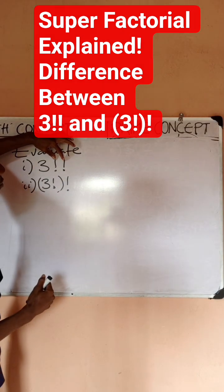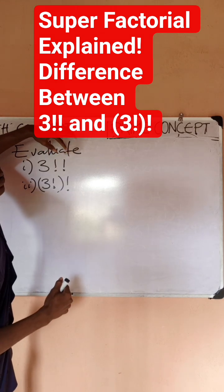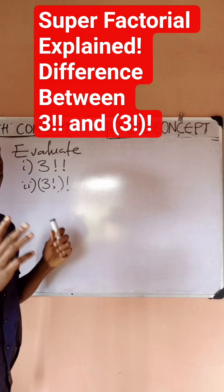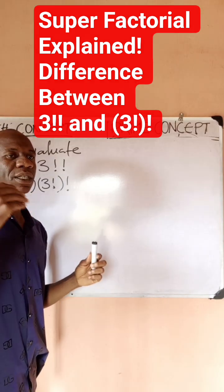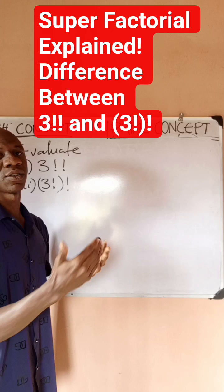This type of factorial, whenever you have double factorial like this following each other, it's called super factorial. Now first, how does factorial behave? Factorial is a compressed way of writing the product of n consecutive integers that decreases.